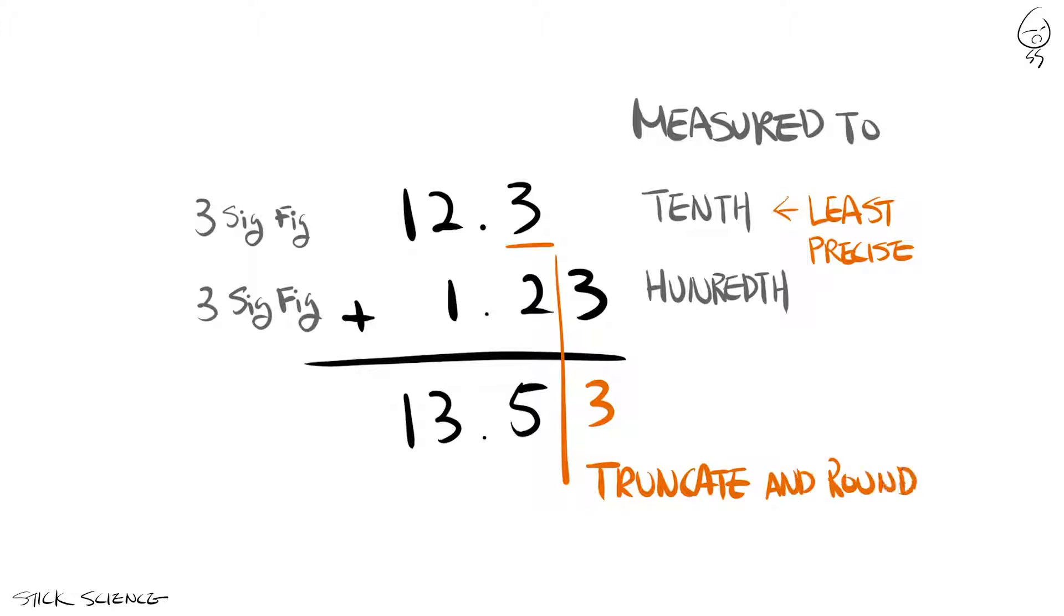Don't know if you noticed, but the number of significant figures itself was never used during this process. All we did was look at the place of uncertainty in the least precise number and just draw a line down next to it.